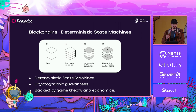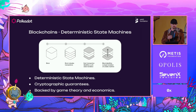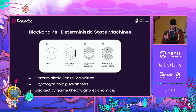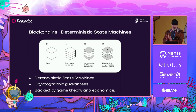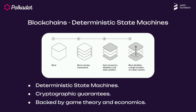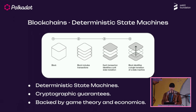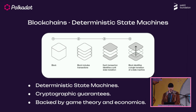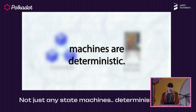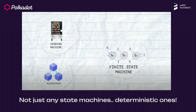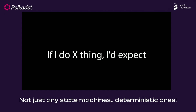As an engineer building blockchains, especially at the protocol layer, you need to learn what certain concepts mean. Blockchains are essentially deterministic state machines — they move from one state to the next. If I give X input I will always get Y output; that's the meaning of something being deterministic. Blockchains are also backed by game theory, economics, and cryptographic guarantees, and they're made up of these components.